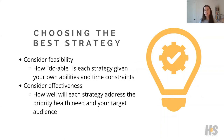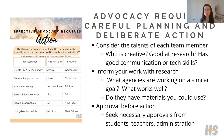Once we have that big list of strategies, we want to rank them by looking at feasibility and effectiveness — how doable is each strategy given our abilities and time constraints, and how effective will it be in addressing the priority health need and our target audience? Once we've ranked those, we get an idea of what strategy is best to pursue. We come to consensus about that strategy, then do some really careful planning and take deliberate action to make it happen. I encourage you to take it all the way to implementation and have students execute their advocacy strategies so they can actually impact change in their school and community.